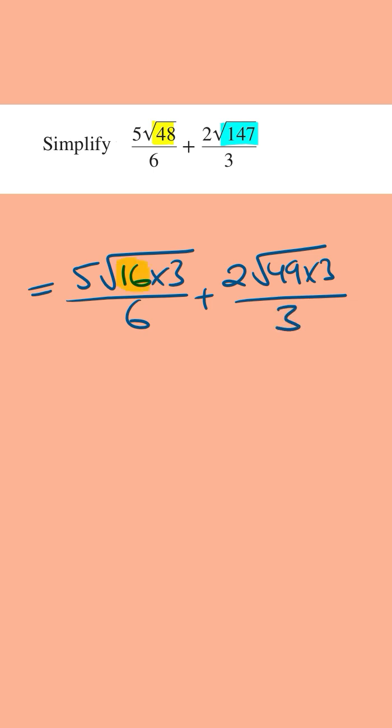From here, the square root of 16 is equal to 4, and we're going to multiply this by the 5, and so 5 times 4, this is going to be 20, and then we've got the root 3 over 6, plus the square root of 49, this is going to be 7, and so we're going to multiply 7 by the 2, that's outside, this is going to be 14, and then we've got root 3 all over 3.